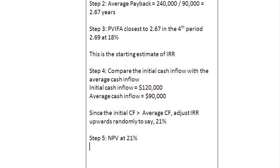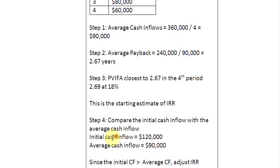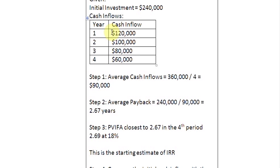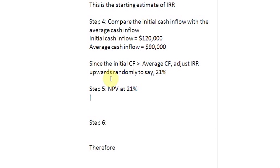When calculating NPV at 21%, we cannot use annuity factors because this is a mixed stream. We first need to find the present value of cash inflows using the present value interest factor of $1 — not the present value interest factor of an annuity of $1 — for each of these periods and amounts.